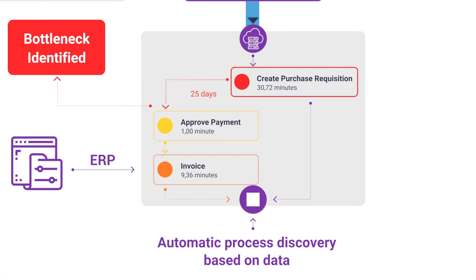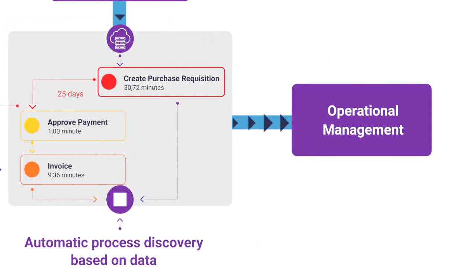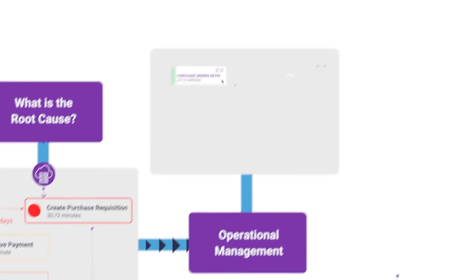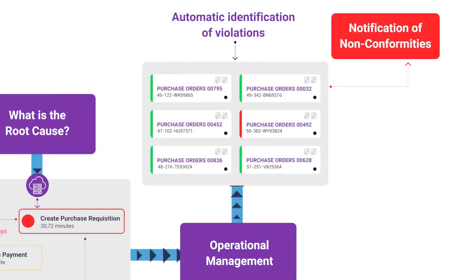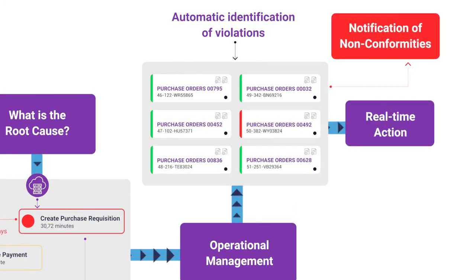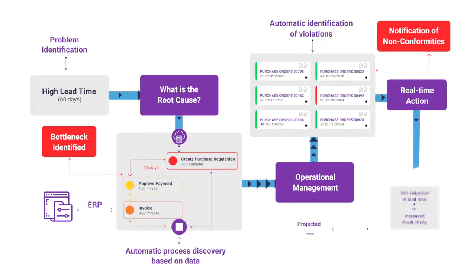Let's assume that this activity should have a maximum execution time of 5 days. With technology, we manage this step and monitor it according to the desired SLA, generating automatic alerts for non-conformities. This way, the team can act in real time in executing activities within the required deadlines, thus reducing lead time.